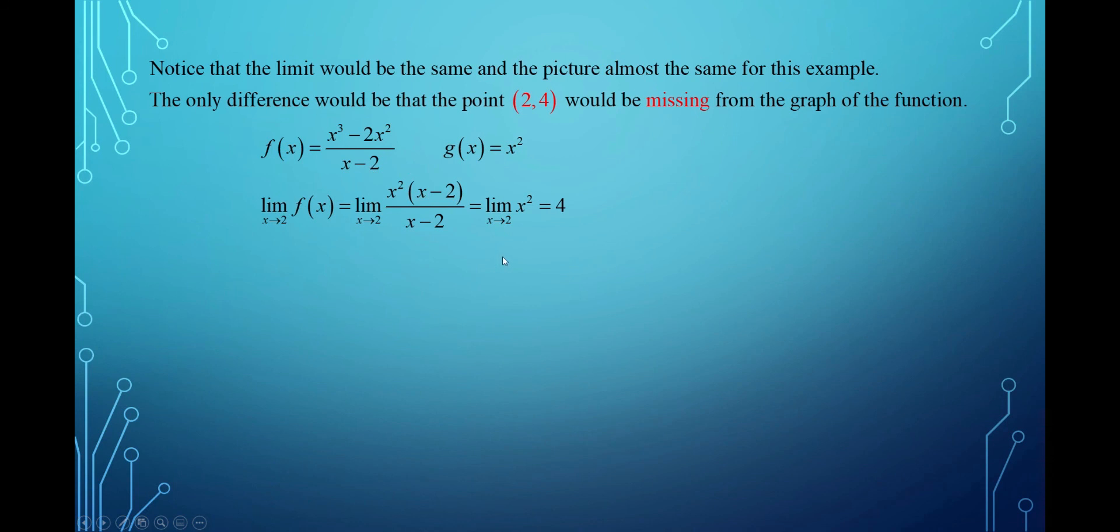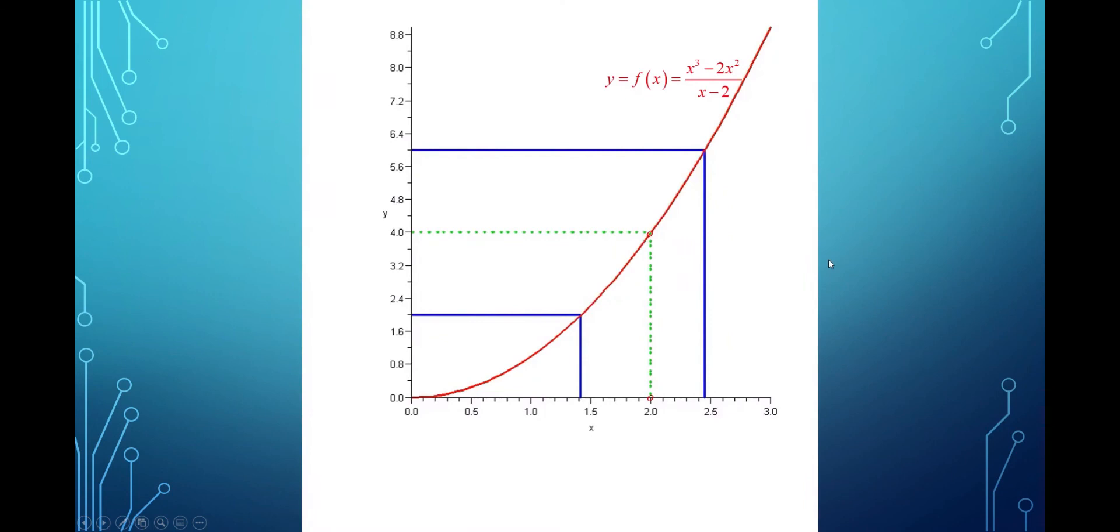and we do have a theorem in calculus telling us that if two functions are identical at all but some discrete value for x, the limits, if they exist at that value for x, will be the same. So the limit as x approaches 2 of f(x) was going to equal the limit as x approaches 2 of what I call g(x) and be 4.